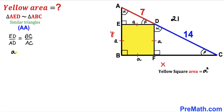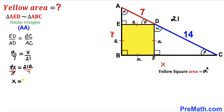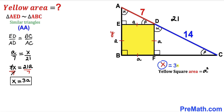So we can write a divided by 7 equals X divided by 21. Cross-multiplying gives 7X equals 21a. Dividing both sides by 7 gives X equals 3a. So the whole side BC has length 3a.